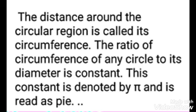Circumference of circle: The distance around the circular region is called its circumference. The ratio of circumference of any circle to its diameter is constant. This constant is denoted by π and is read as pi.